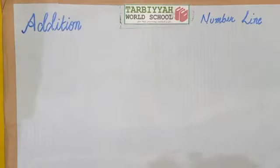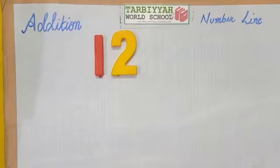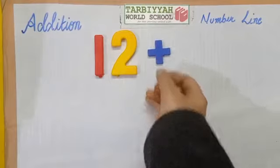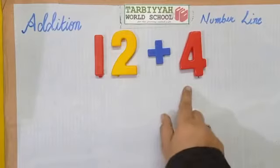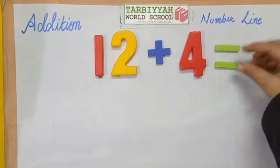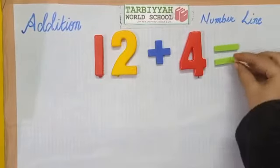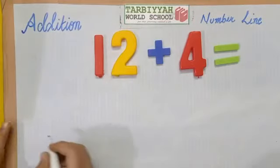See, which number is this? 12. We have to add 4 to number 12. Let's check on the number line. Let's do addition on number line. First, we have to draw a number line.